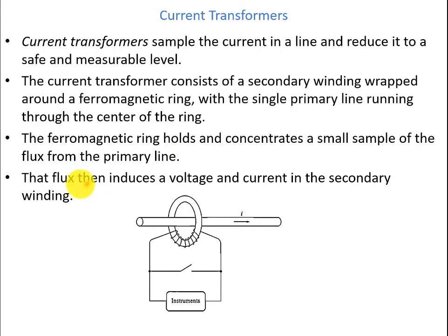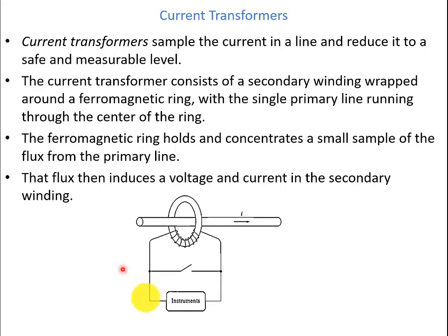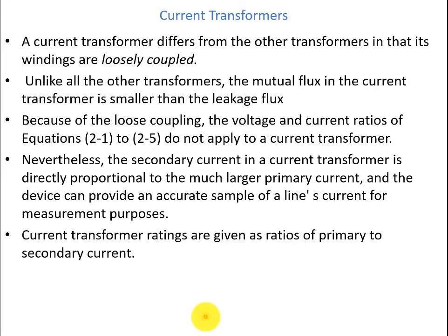That flux then induces a voltage and current in the secondary winding, so we can have the measurement by accordingly transforming that current to the actual value. A current transformer differs from other transformers in that its windings are loosely coupled.